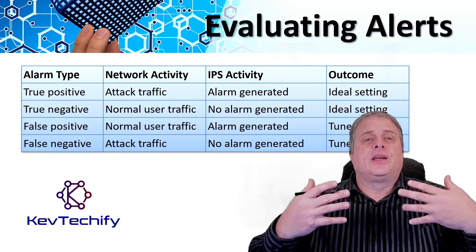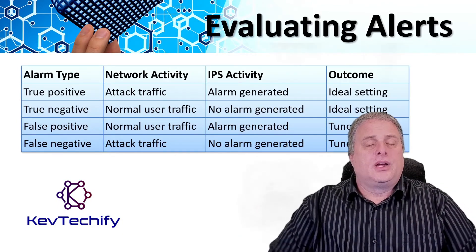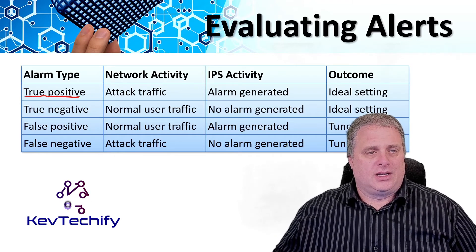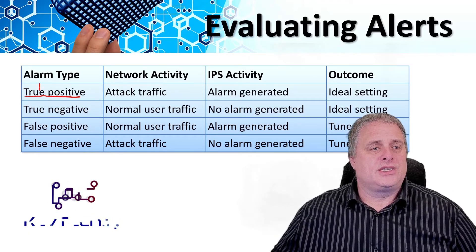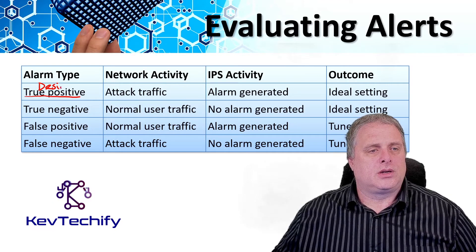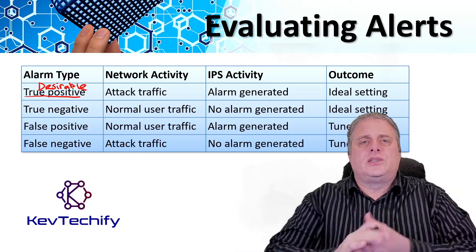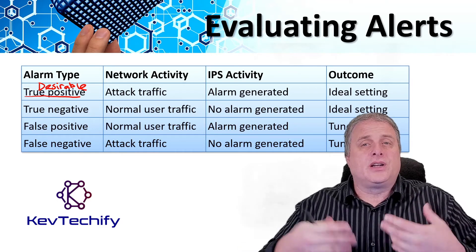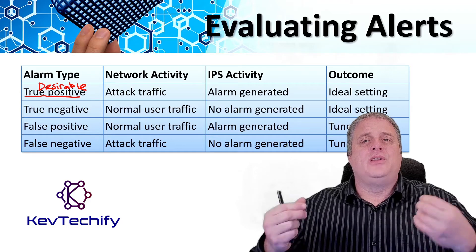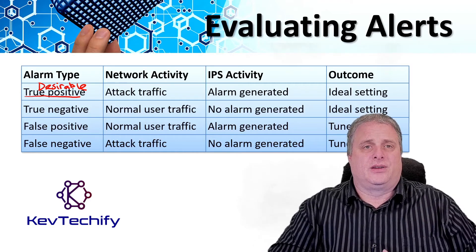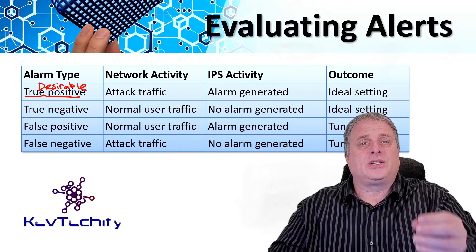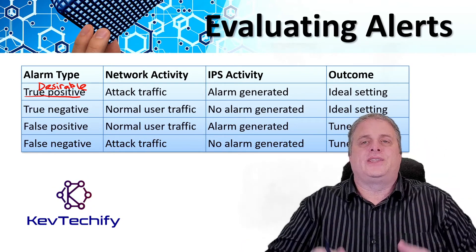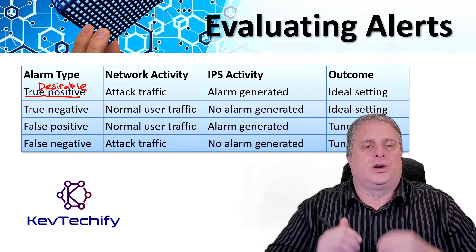Alerts can be classified in a couple of different ways. The first is a true positive, which is desirable. This is used when the IPS generates an alarm because it detects known attack traffic. The alert has been verified to be an actual security incident, and it also indicates that the IPS rule worked correctly.